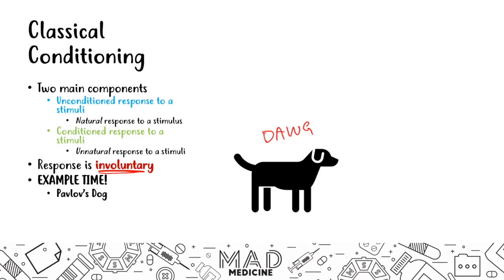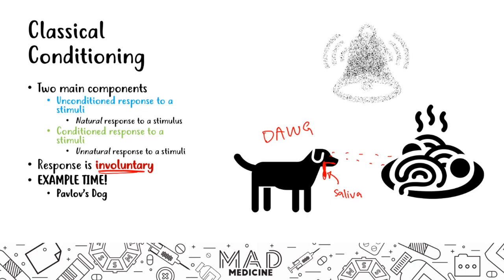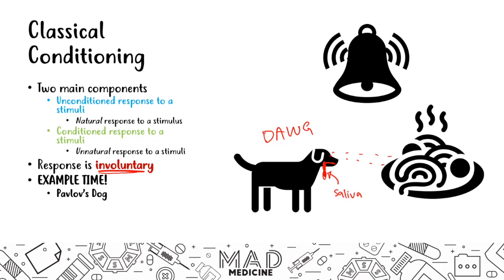Pavlov had his dog, and he realized every time he gave the dog food — every time the dog smelled or saw food — it would start to salivate. It's just saliva, guys. The dog would salivate at the sight or smell of food. Eventually, Pavlov started to ring a bell every time he gave the dog food. What happened over time was that the dog began to associate the bell with the sight and smell of food. When Pavlov took away the food and only rang the bell by itself, the dog still salivated.